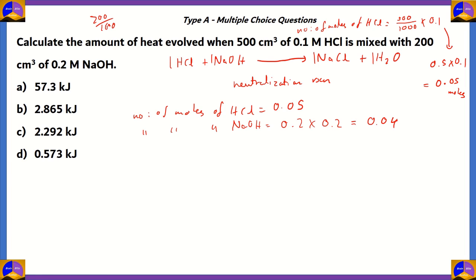So, as you can see, there are 0.05 moles of HCl and 0.04 moles of NaOH. And so, we found that out. Now, if you notice the reaction, you can see that one mole of NaOH reacts with one mole of HCl. So, according to the equation and also the number of moles that we found out, 0.04 moles of NaOH will be neutralized by 0.04 moles of HCl.